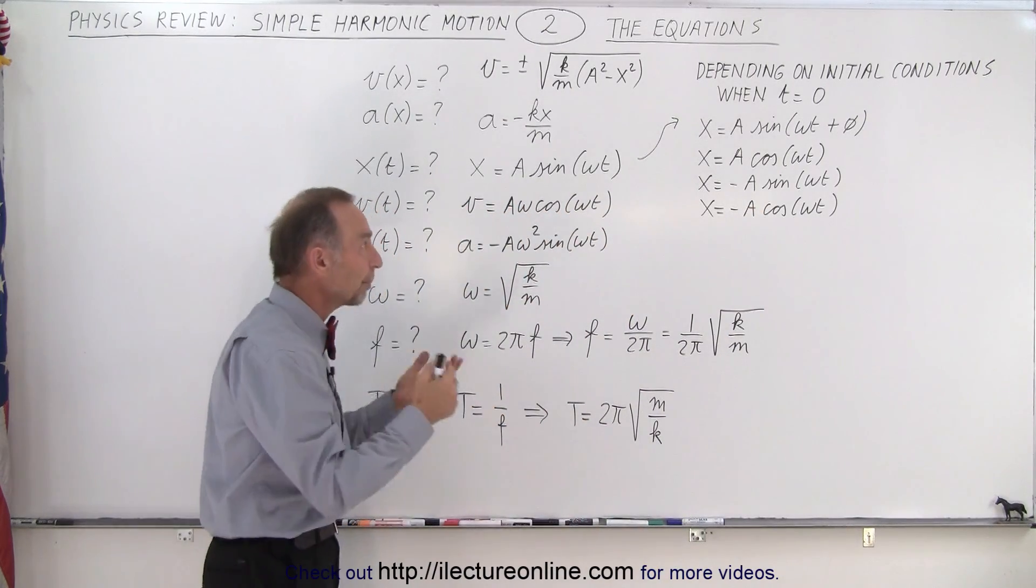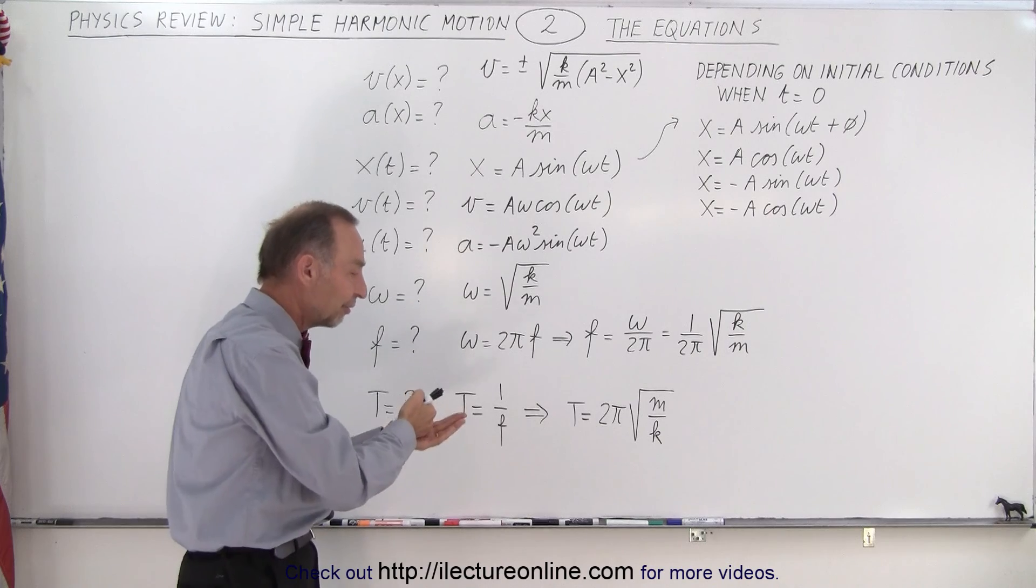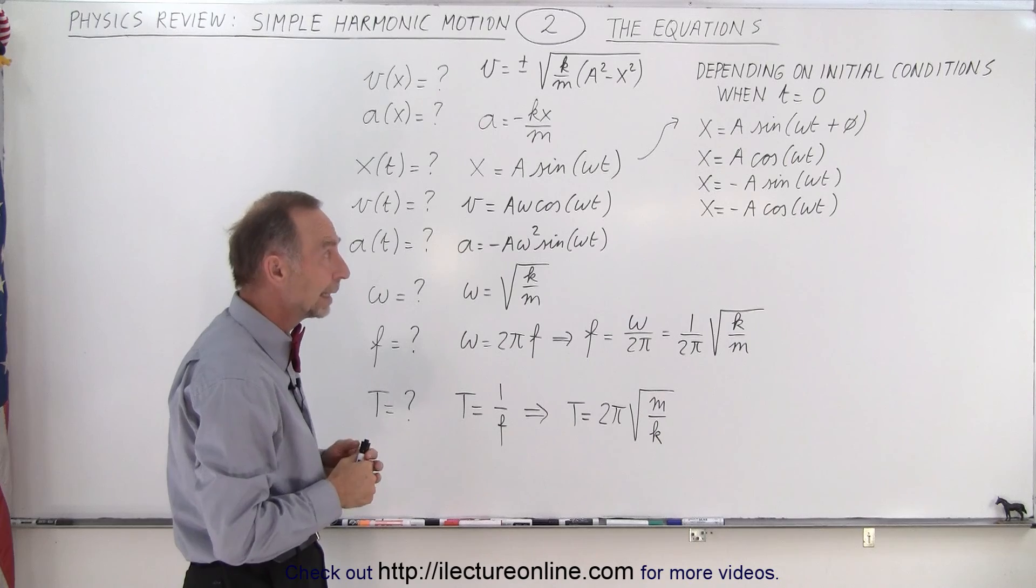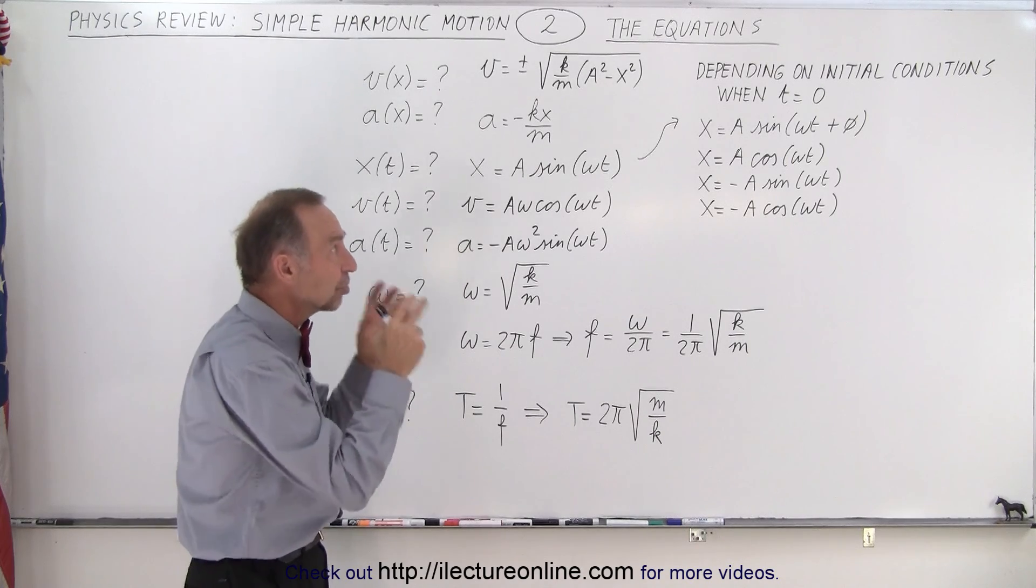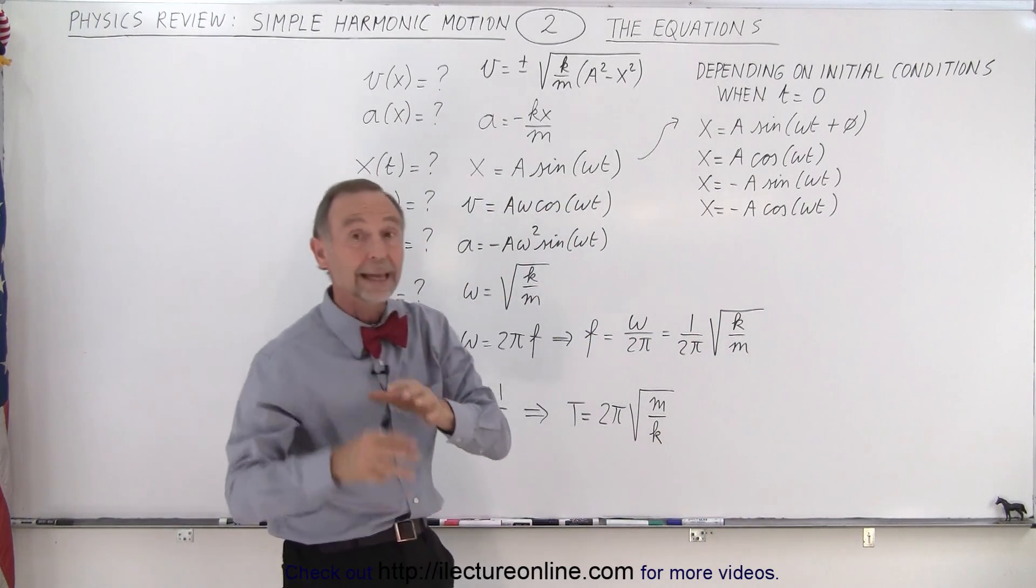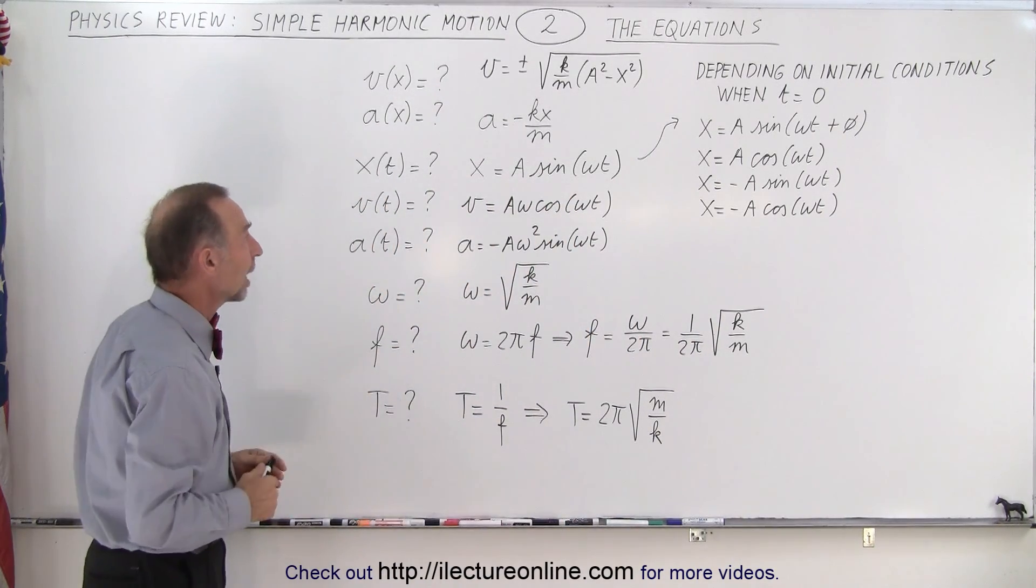All of those equations represent the position as a function of time for an object that is oscillating according to simple harmonic motion, and it's all depending upon the initial conditions when time equals zero as to which equation we pick. And later on, we'll show you a video on how to do that.